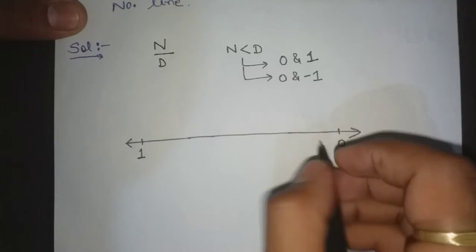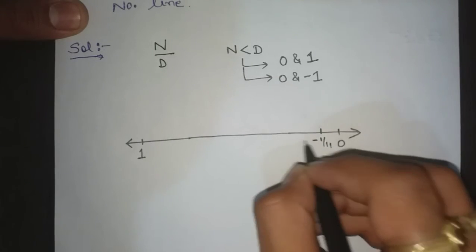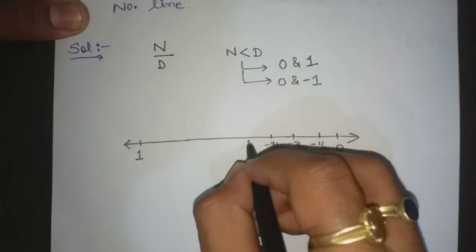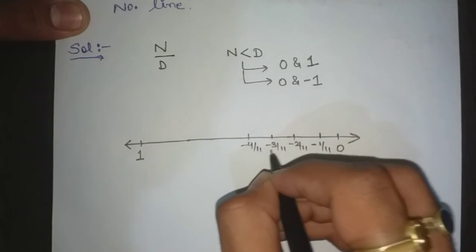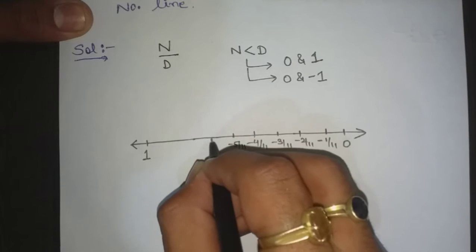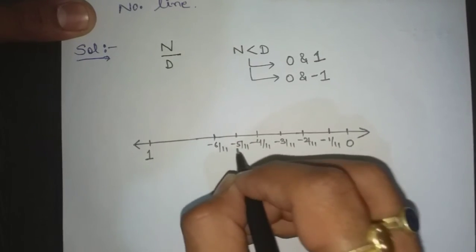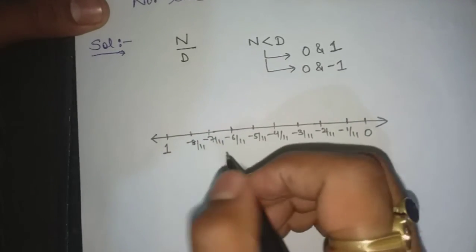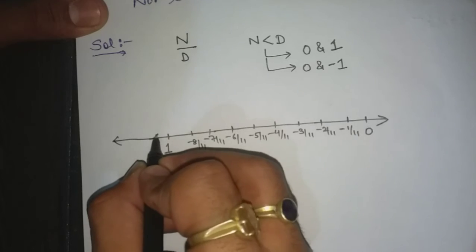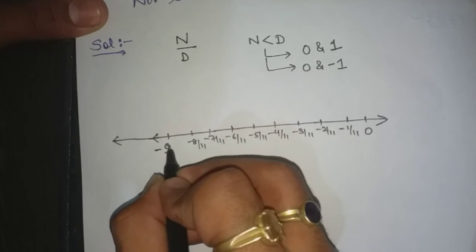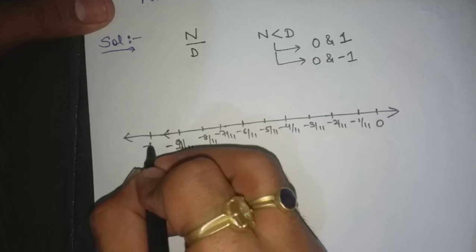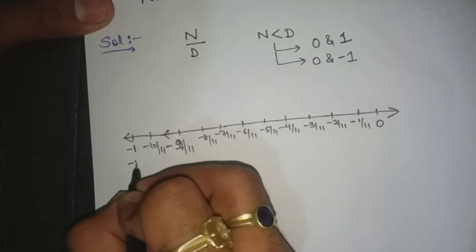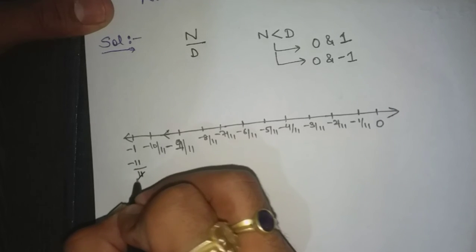Starting at 0, then minus 1 by 11, minus 2 by 11, minus 3 by 11, minus 4 by 11, minus 5 by 11, minus 6 by 11, minus 7 by 11, minus 8 by 11, minus 9 by 11, minus 10 by 11, and minus 1, which is minus 11 by 11.